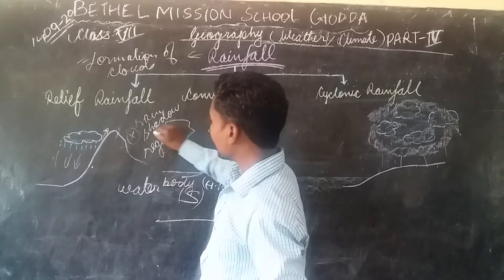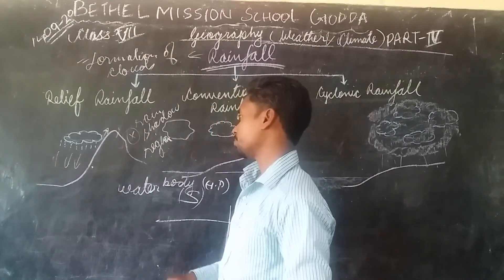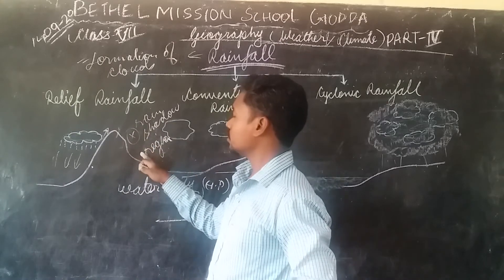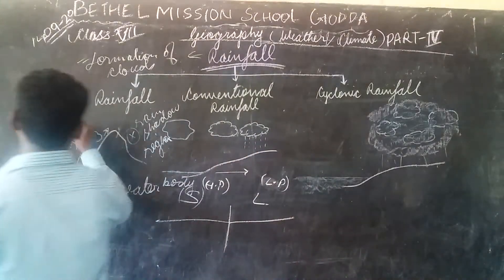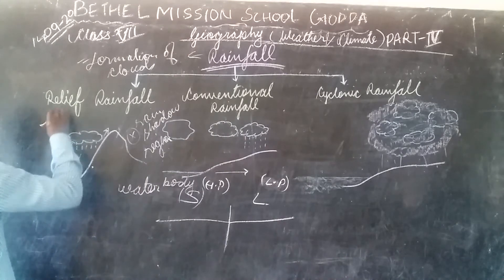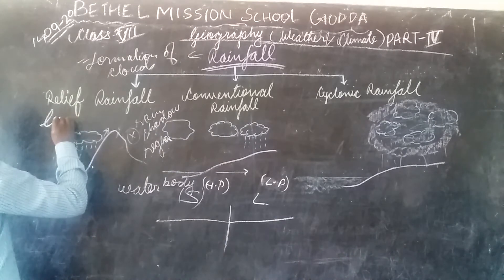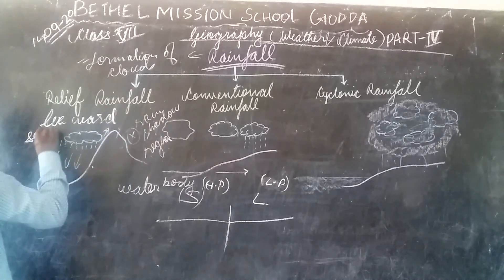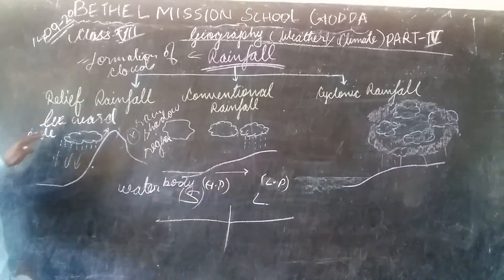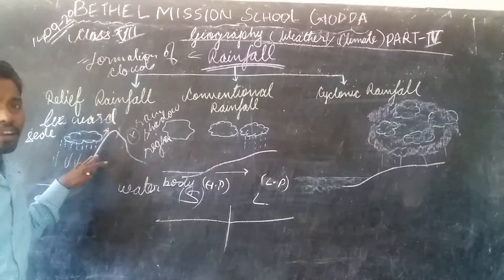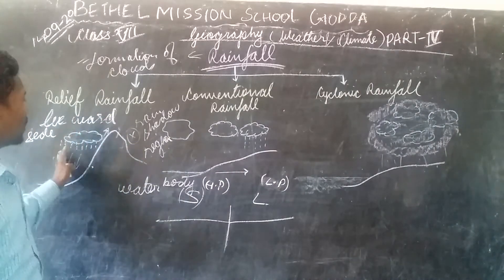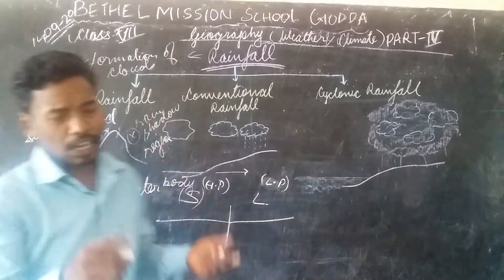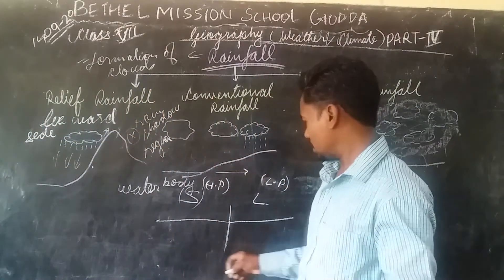The side that does not receive rainfall is called the rain shadow region, and this side is called the leeward side. The rainfall falls on the windward side, while the leeward side is the rain shadow region.